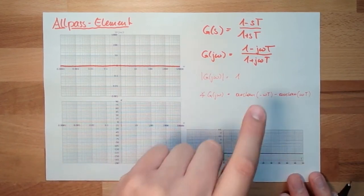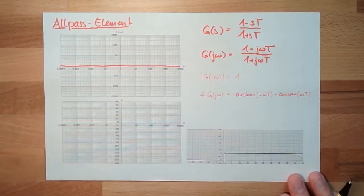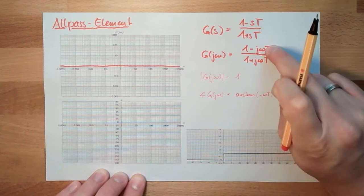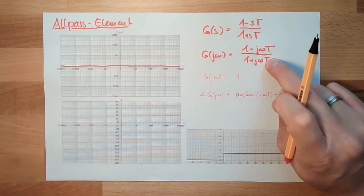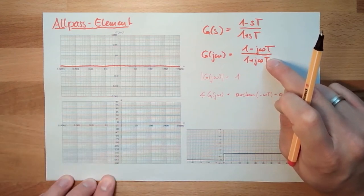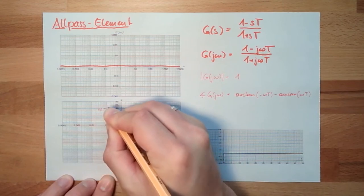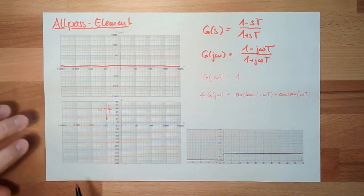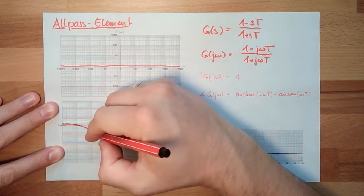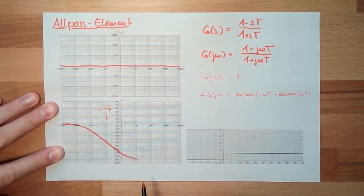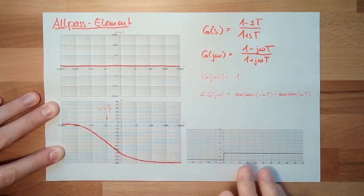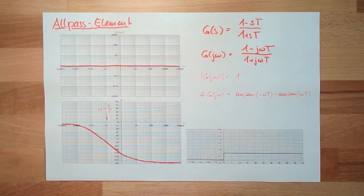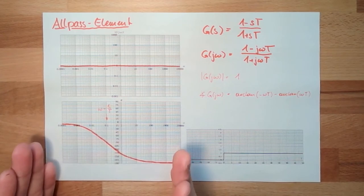At the specific frequency ω = 1/T, we have −45° minus 45°, giving −90°. So at ω = 1/T the phase is −90°. The Bode plot of the phase looks similar to a PT1 element, but this time it goes from 0° down to −180° rather than 0° to −90°.